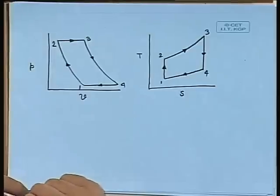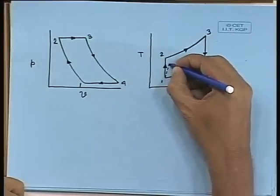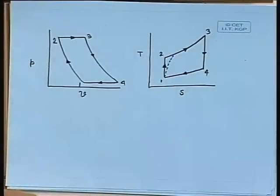Now let us think about the non-ideal situation. For 1 to 2, isentropic compression will not remain isentropic — due to irreversibility, entropy will increase, so the process will go in that direction. For the constant pressure heat addition, pressure will not remain constant — as temperature changes, there will be a drop in pressure due to friction.